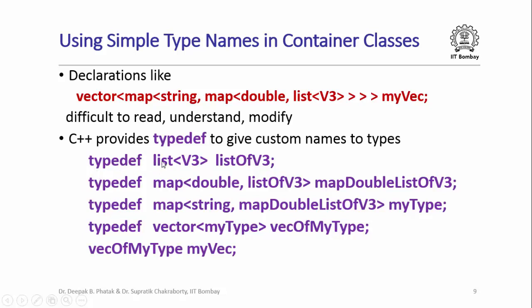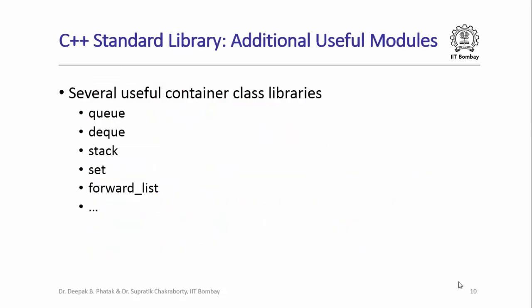typedef can be used not only with container classes but also with primitive types. For example, you could write typedef int myint and use myint as an alias for int everywhere in your program. In our study of the C++ standard library we have encountered only a very small subset of modules and classes. There are several other useful container classes, including the queue class, the deque class, the stack, set, and forward list classes.